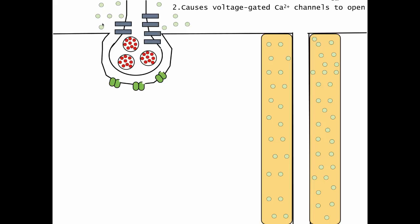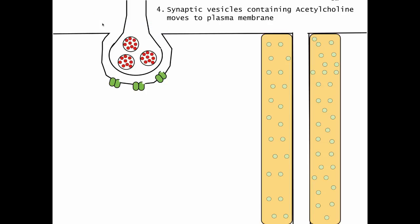When this occurs, calcium is going to move into the neuron down its concentration gradient. This movement of calcium into the neuron is going to stimulate synaptic vesicles containing acetylcholine to move to the plasma membrane.